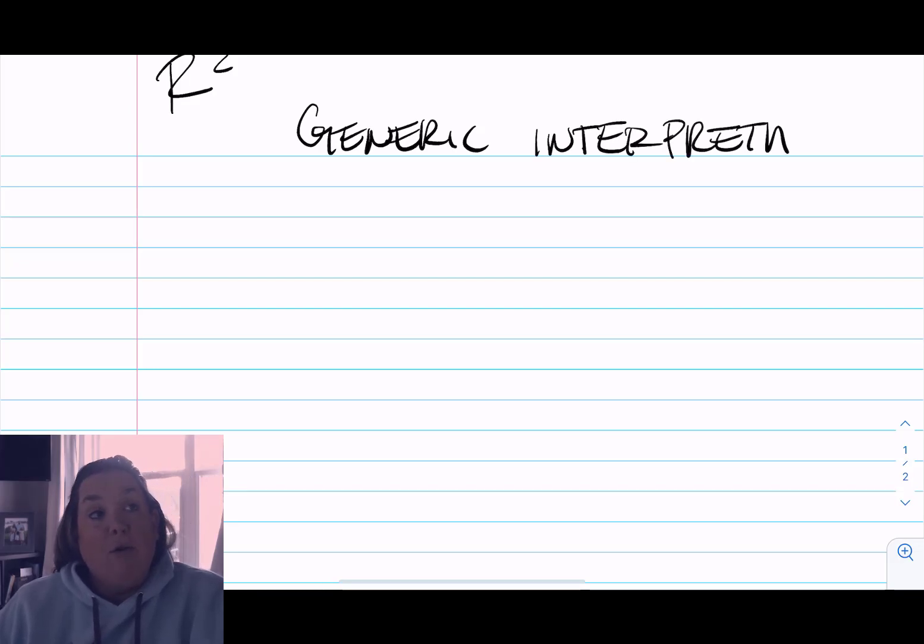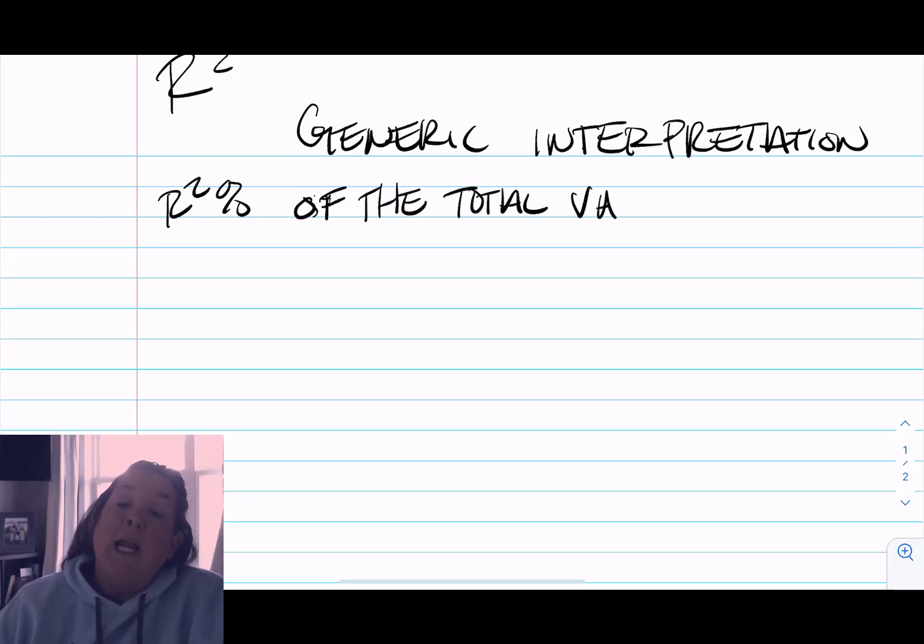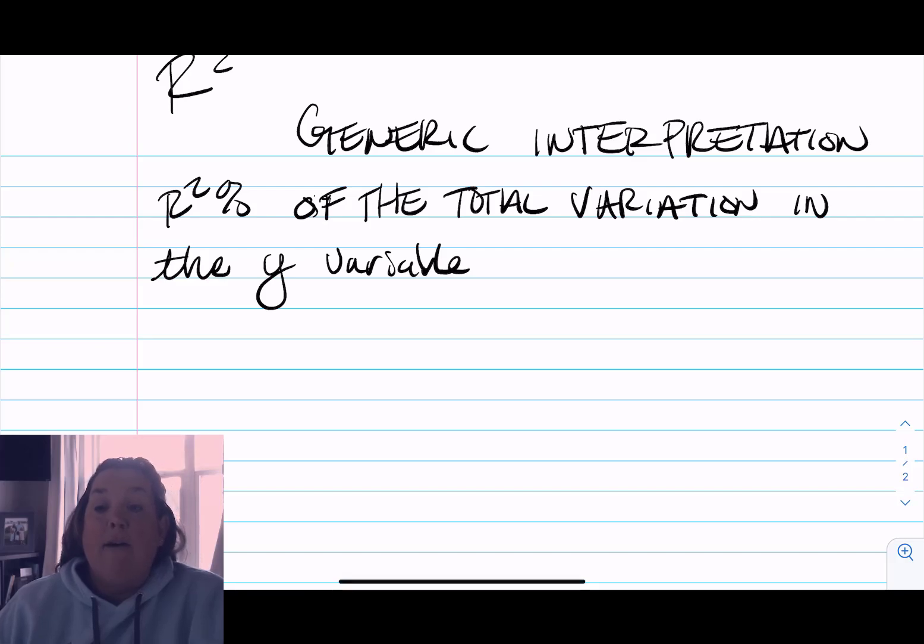Generically, if we interpret an R² value, we say: R² percent of the total variation in the y variable, or response variable. You'll notice 'total variation' is in all caps - that's because those words will always be used.